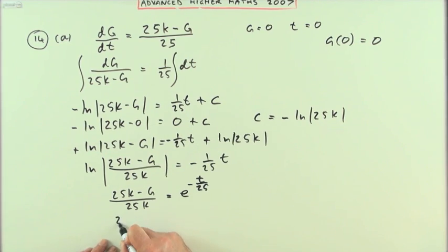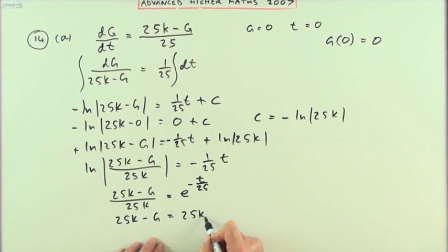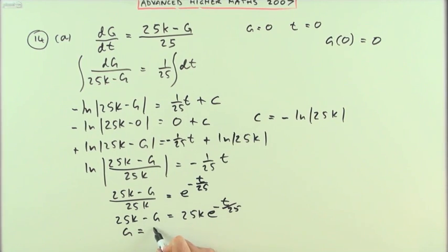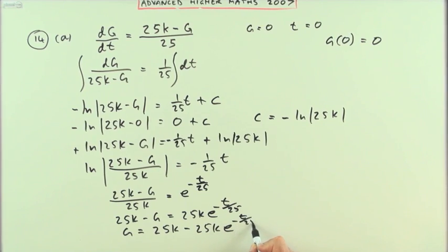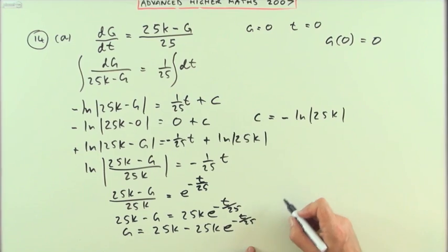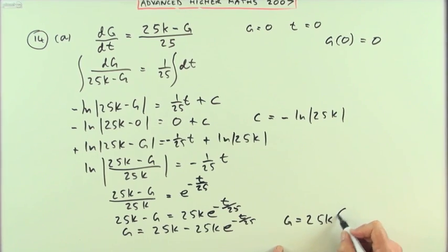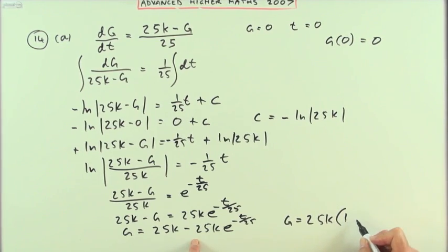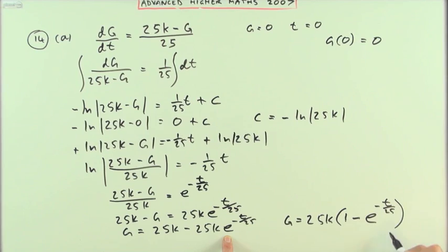25k minus g is 25k·e^(-t/25). So g is going to be, taking the g over, reading that back: 25k - 25k·e^(-t/25). So finally I've got g equals, take that factor of 25k out: 25k times (1 - e^(-t/25)).